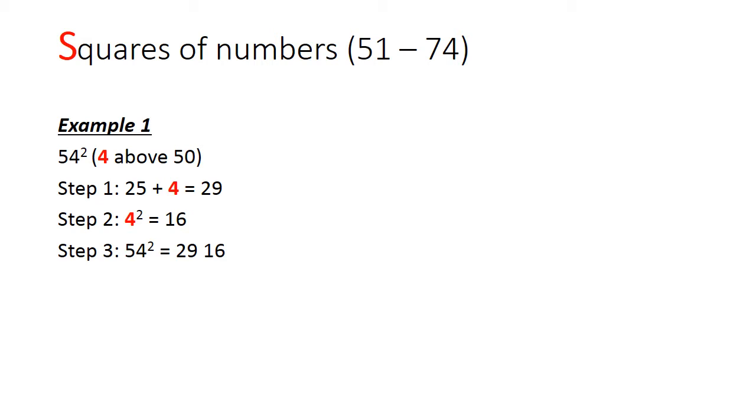Since it is 4 above 50, 4 is going to be our key number. The first step is to add 4 to 25 to get 29. Then we'll square 4 to get 16, and we'll put those two numbers together to get 2916. So the square of 54 is 2916.